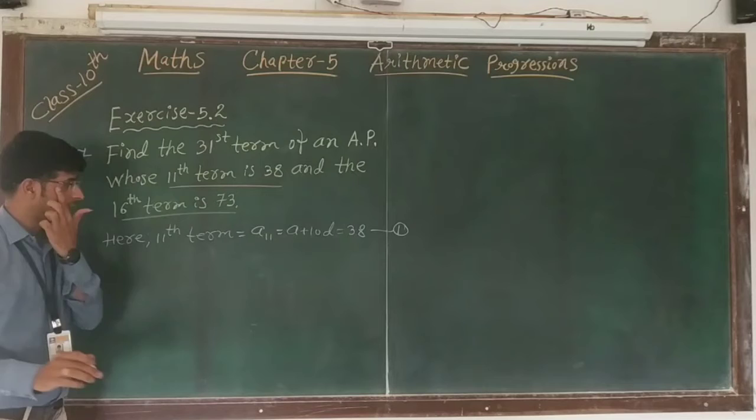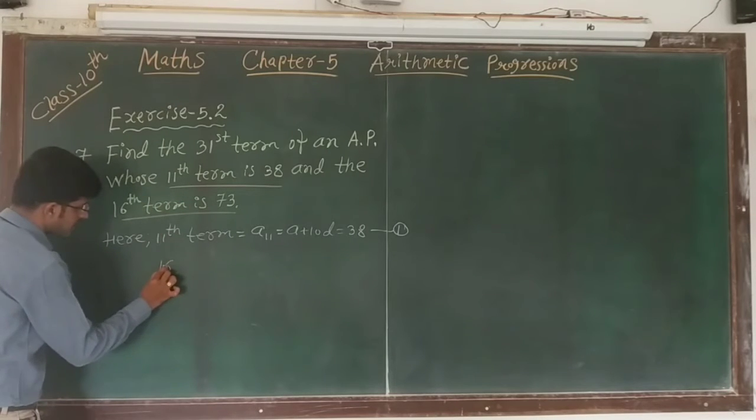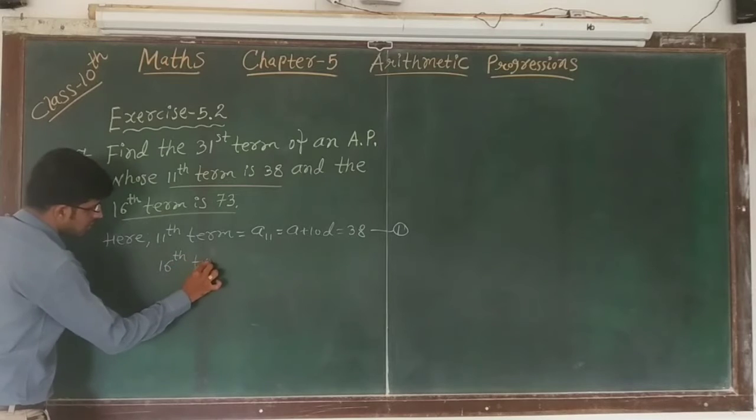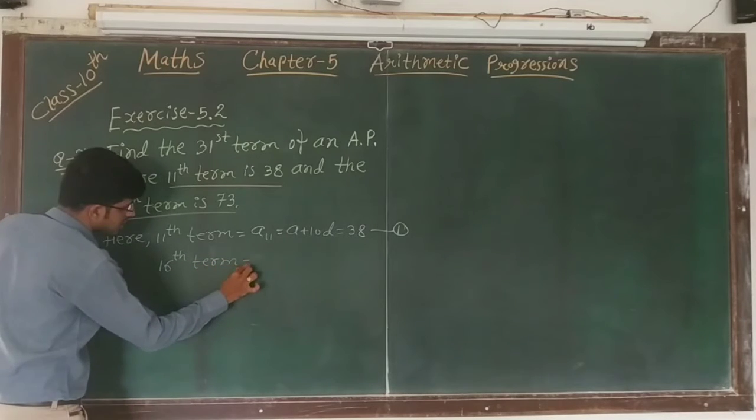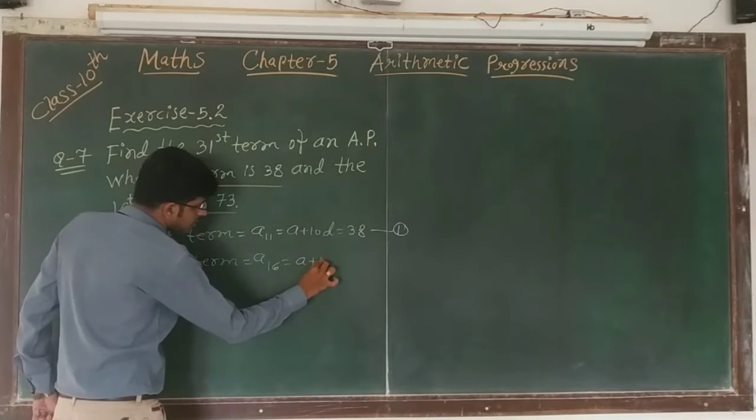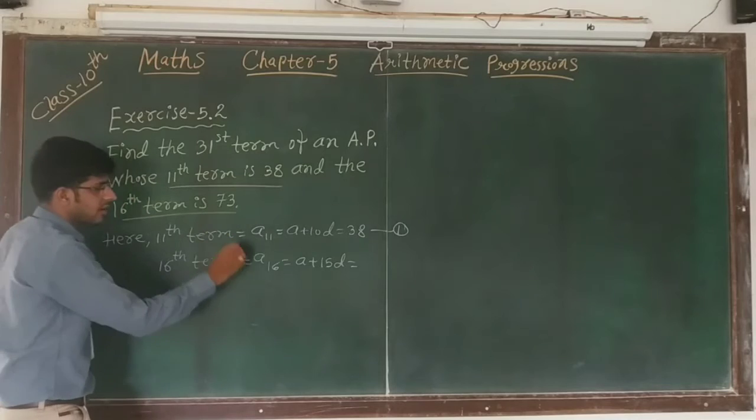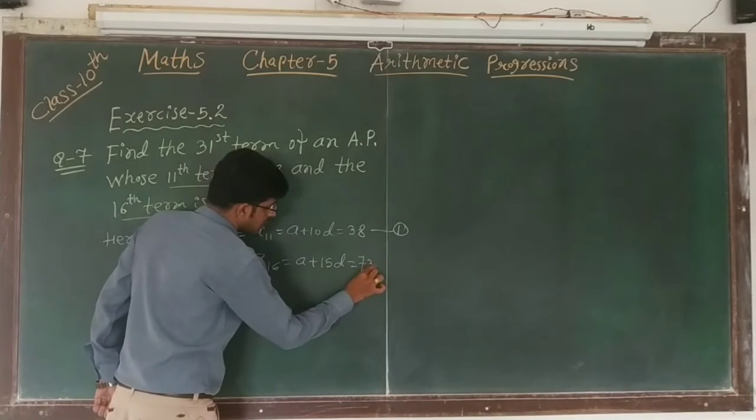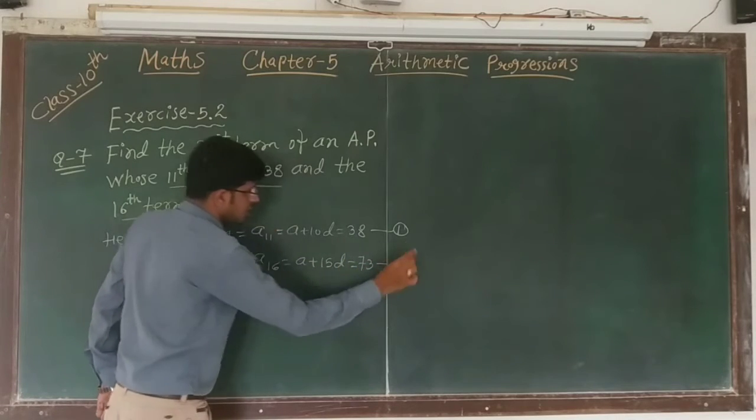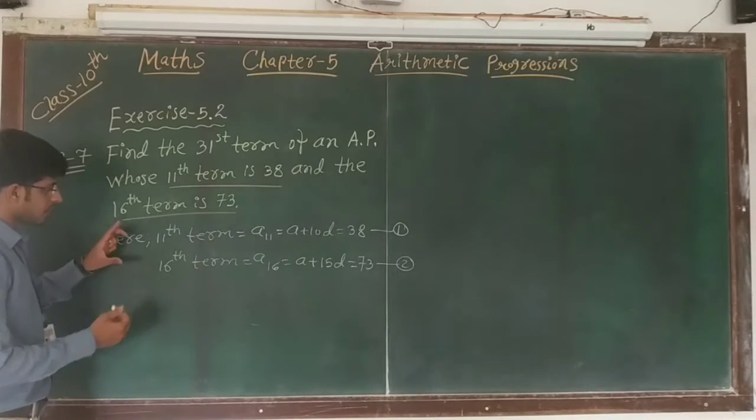And the 16th term is given as 73, so we will write down the 16th term is given by a16 is equal to a plus 15d is equal to 73. It is called equation number 2.